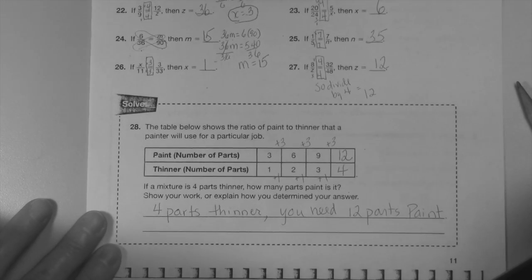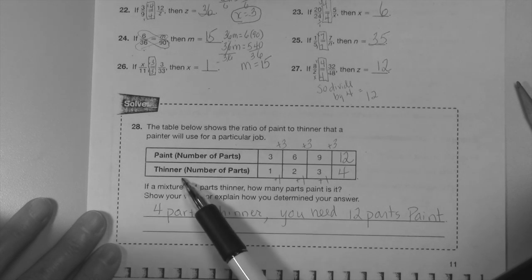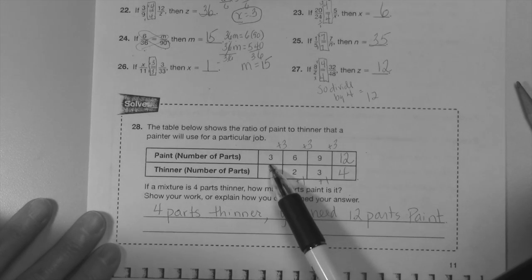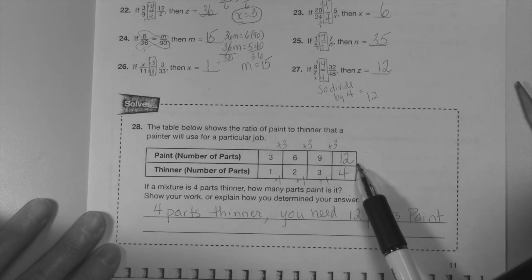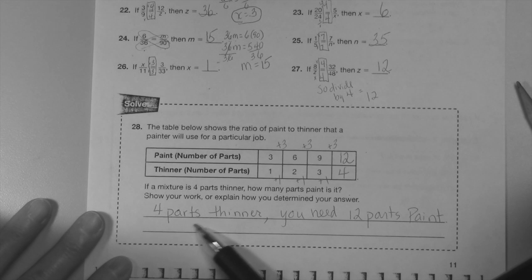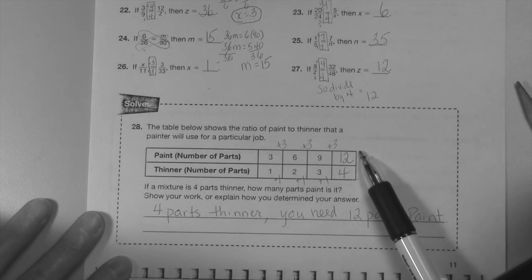And on the bottom, I just recognized in the table number of parts of paint and the number of parts of thinner. Well, right across the top it was counting in a pattern of plus 3, so the next number is 12. The bottom was counting by 1, so it was 4 parts of thinner. You need 12 parts of paint to complete that mixture.